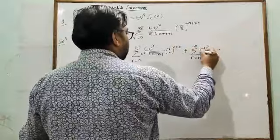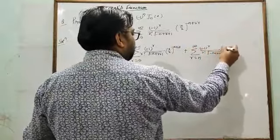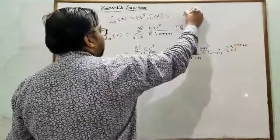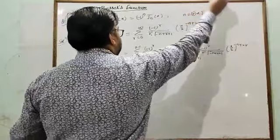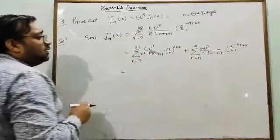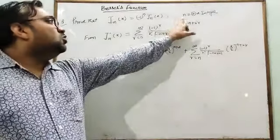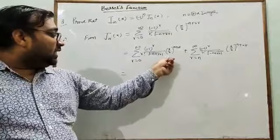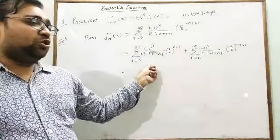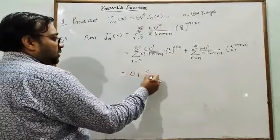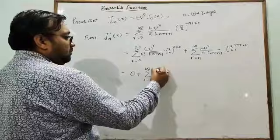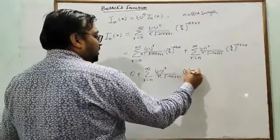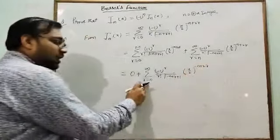The first sum runs from r=0 to n−1: [(−1)^r / (r! · Γ(−n + r + 1))] · (x/2)^{−n+2r}, and the second from r=n to ∞. Since n is a positive integer, Γ(−n + r + 1) is not valid for negative integer arguments in the range r = 0 to n−1. So the first summation equals 0, leaving J_{-n}(x) = Σ (r=n to ∞) [(−1)^r / (r! · Γ(−n+r+1))] · (x/2)^{−n+2r}. Now we change the summation index.